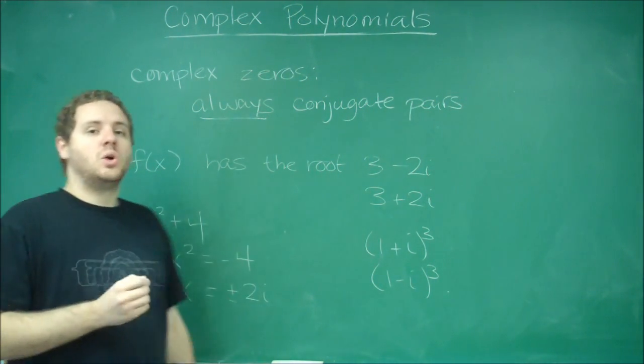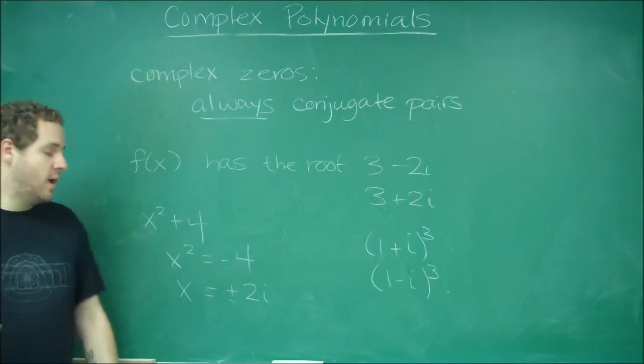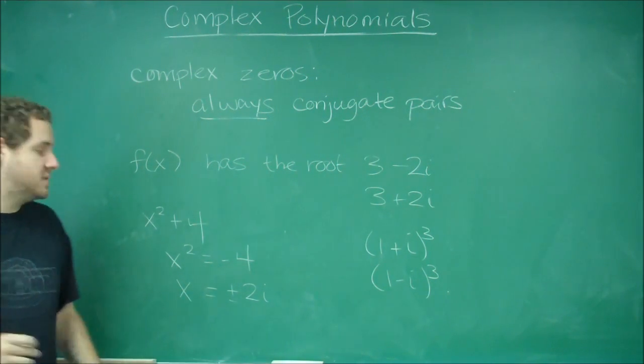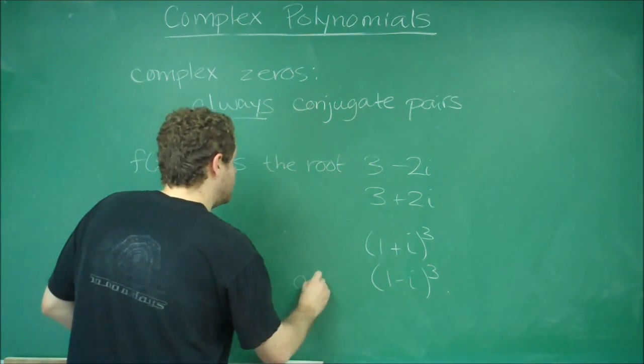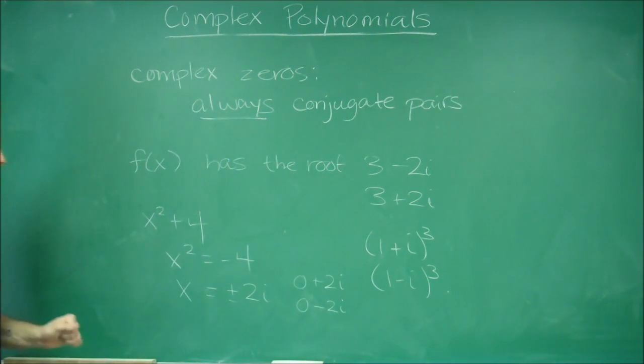Because when we have i squared, we would get the negative, the plus or minus 2 is what gives you the 4, and you have two roots of this. As you can see, these are complex conjugates because essentially we have 0 plus 2i, 0 minus 2i.